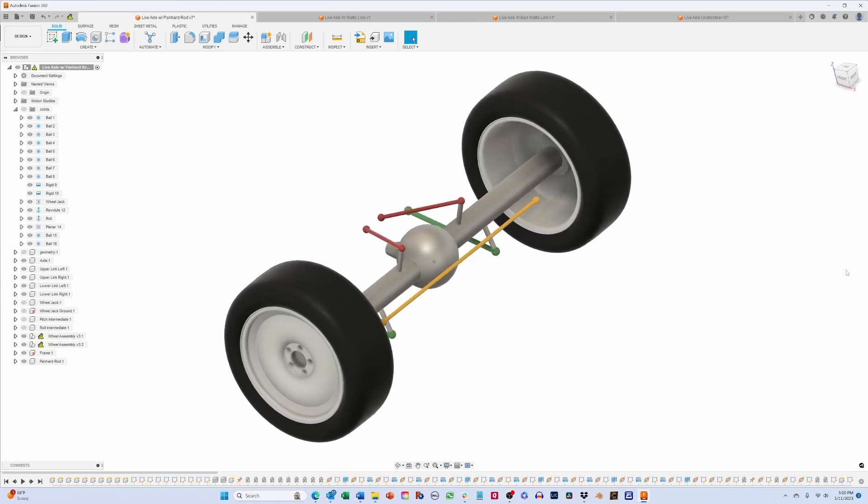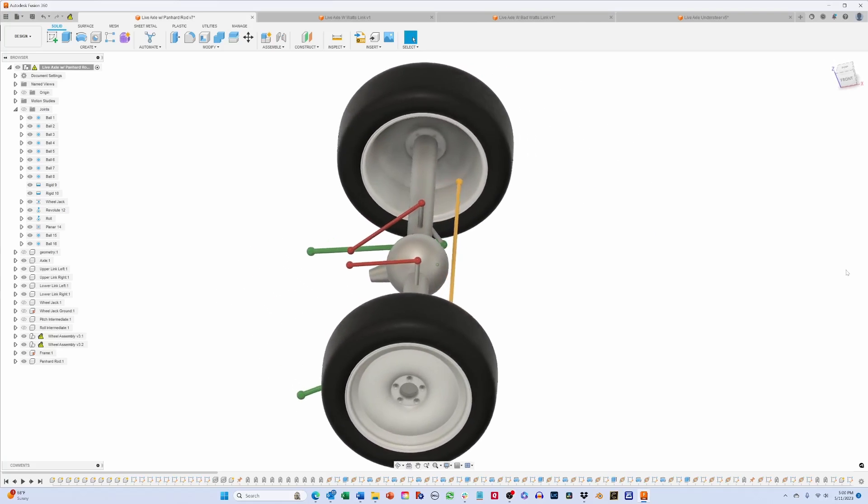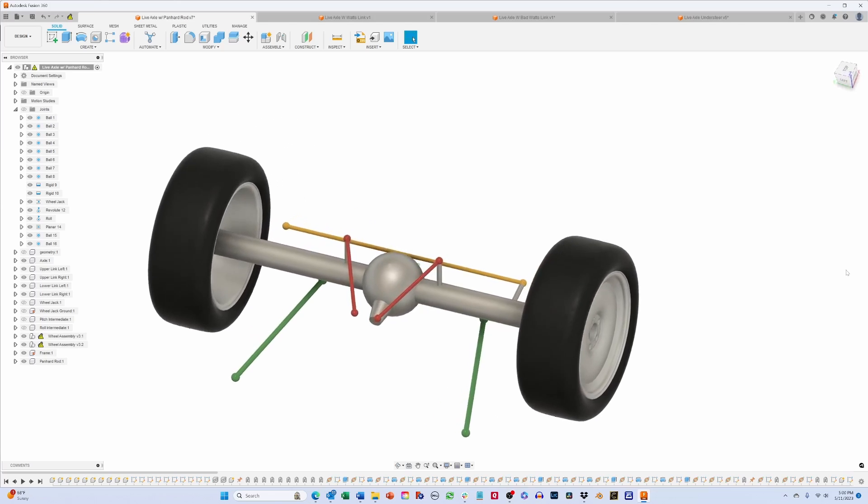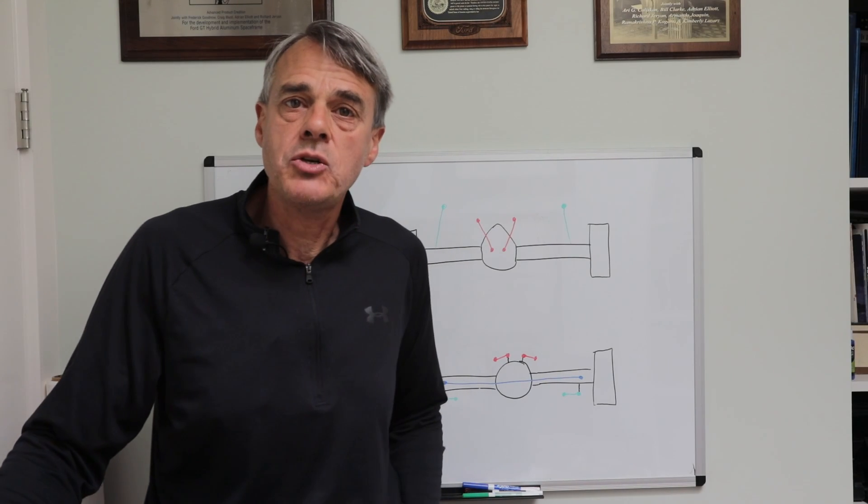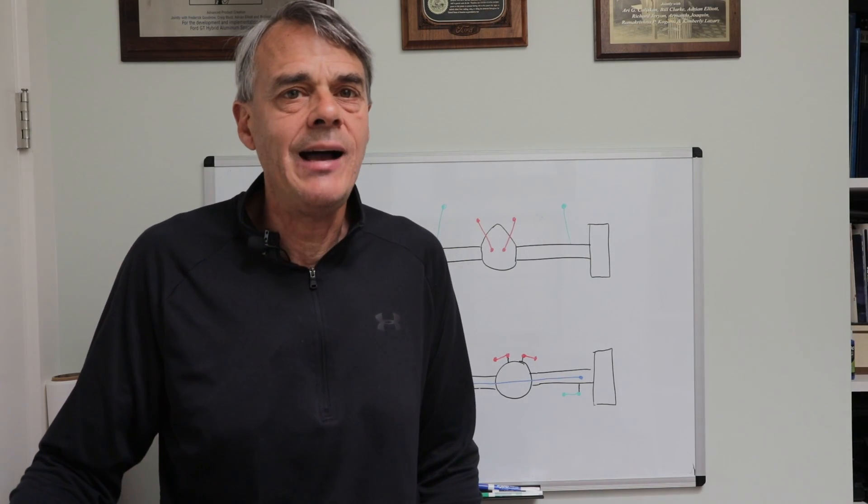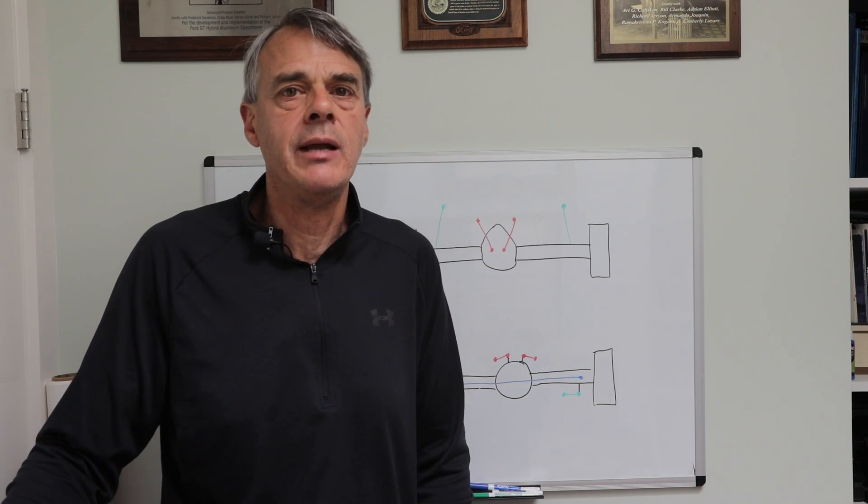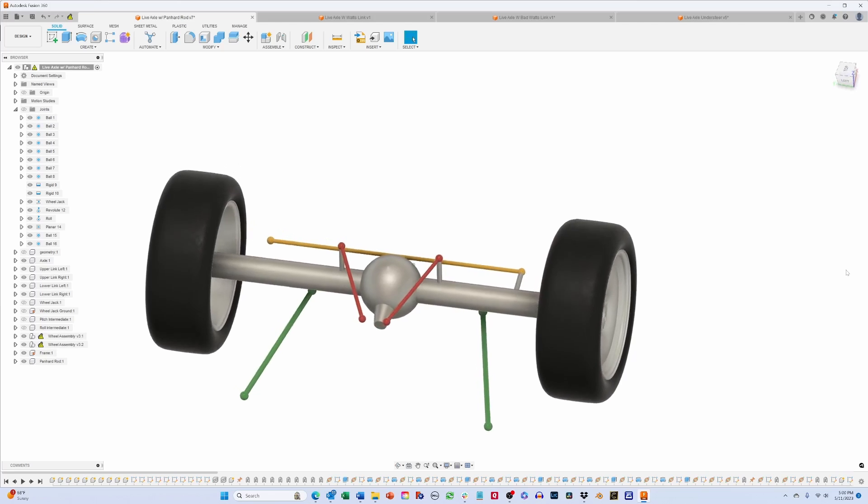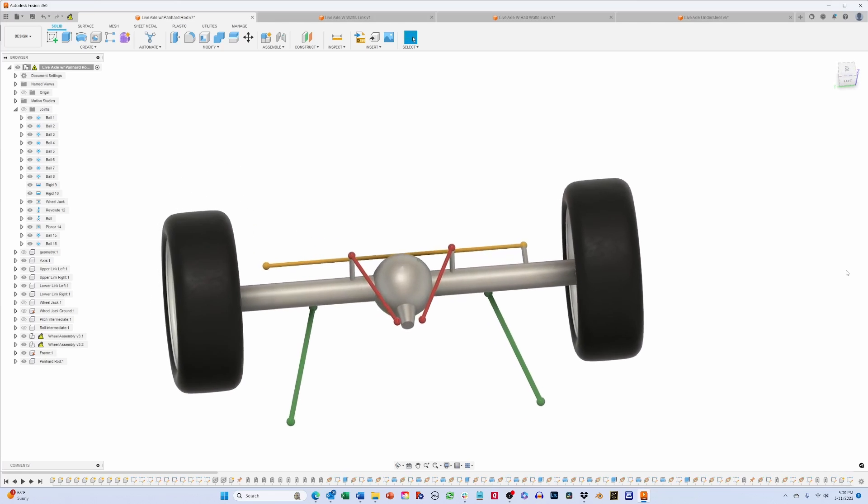Now let's look at a Panhard rod, shown here in yellow, which just takes the four-link design and adds a lateral rod between the axle and the frame. For those of you paying attention, you might have noticed that we now have five links, which means we only have one degree of freedom left over. And you would be right. But how do we get both vertical and roll motion out of this axle then?